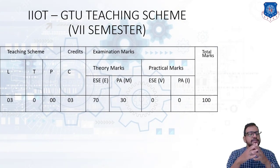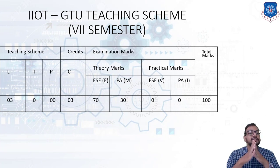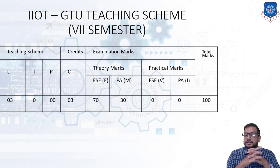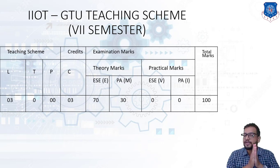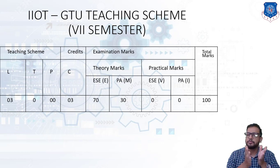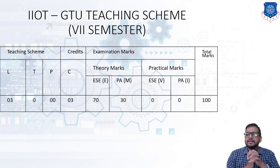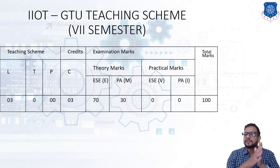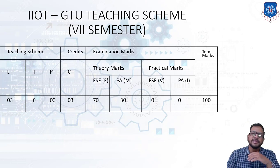Regarding the teaching scheme: IIoT — Industrial Internet of Things — has three lectures per week, with a credit of three. For examinations, the theory and semester exam marks are out of 70, and the mid-semester exam marks are out of 30. There are no practicals, as it is a theoretical and understanding subject. The total marks for this subject is 100 — 70 marks for the end-term exam and 30 marks for the mid-semester exam.